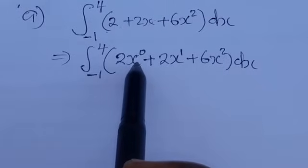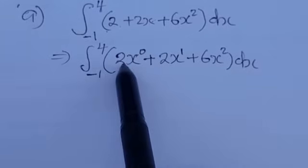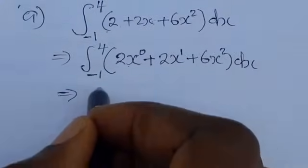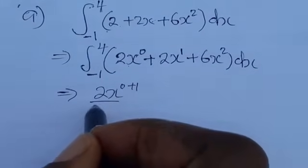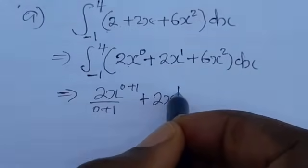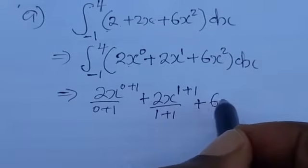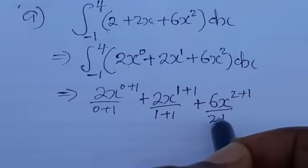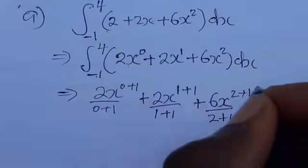To integrate means you're going to add 1 to the power and then divide every term by the new power. So we're going to have 2x to the power 0 plus 1, divided by 0 plus 1, then plus 2x to the power 1 plus 1, divided by 1 plus 1, then plus 6x squared plus 1, divided by 2 plus 1, with limits from negative 1 to 4.